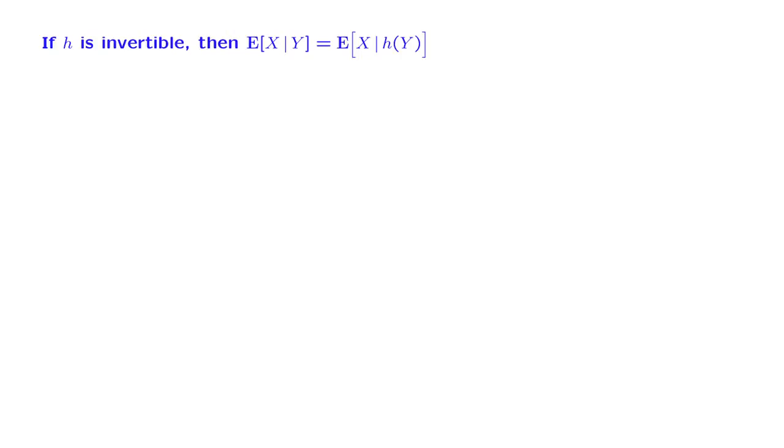Let us now move to a second observation. Suppose that H is an invertible function. What does that mean? That if I give you the value of H, you can tell me the value of the argument. So in some sense, Y and H of Y can be recovered from each other. If I give you Y, you can calculate H of Y, but also if I give you H of Y, you can figure out what Y was. An example could be the function H of Y equals Y to the third power.